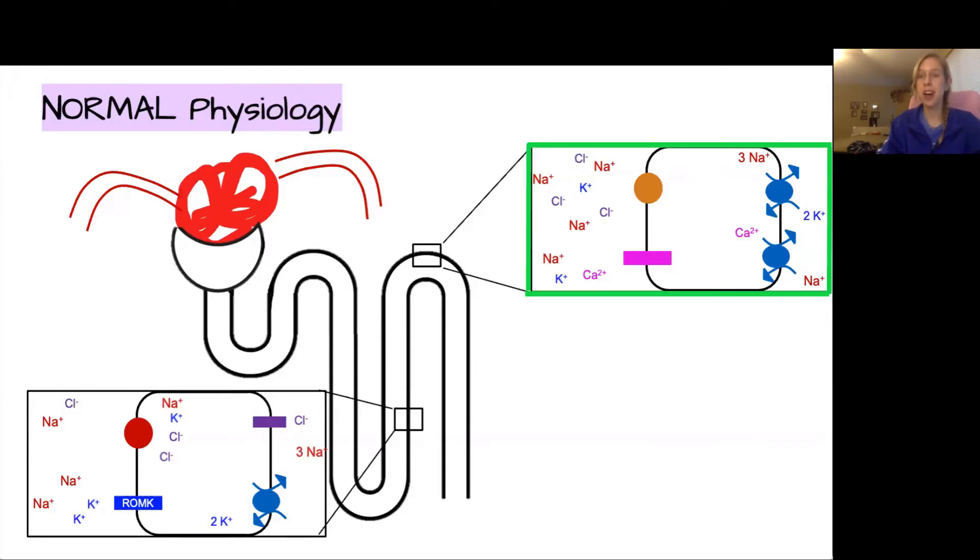Meanwhile, in the distal convoluted tubule, we have another really important pump called the sodium-chloride co-transporter. As the name implies, it brings in both sodium and chloride together. This pump is powered by both a sodium-potassium pump and a sodium-calcium pump, which is also tied to a calcium channel.